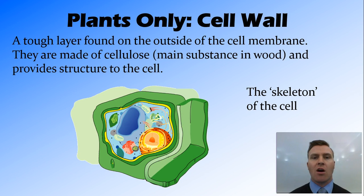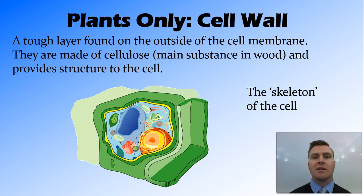Now for things only found in plant cells. The first is the cell wall. On the outside of the cell membrane, plant cells have another layer called the cell wall, made of a material called cellulose — when you have wood, that wood is the cellulose left over from those cells. This provides structure to the cell as well as to the plant. Unlike animals, which mostly have a skeleton, plants don't have one, so their rigidity comes from the cell wall surrounding each individual cell — that's what stops the plant from falling over. Think of it as the skeleton of the cell.